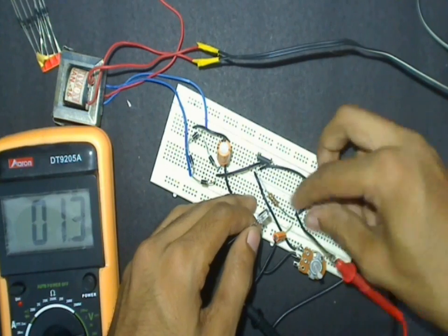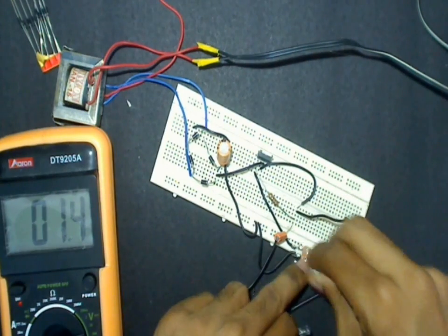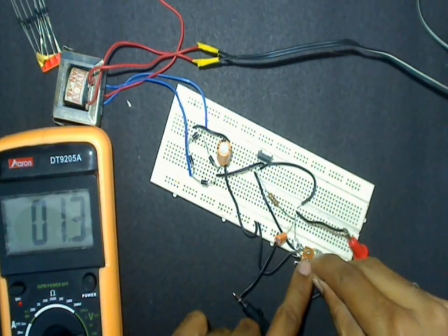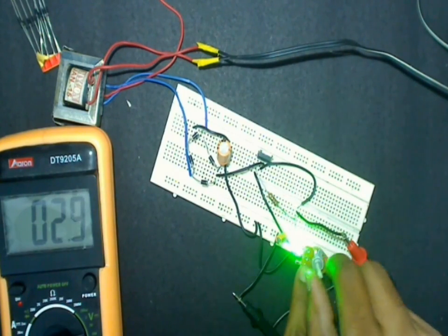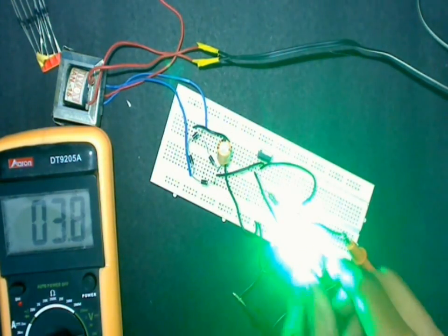Now let's test an LED over this power supply. This is a green LED and as you can see by slightly increasing the voltage the LED starts lighting up and the brightness increases as I increase the voltage.